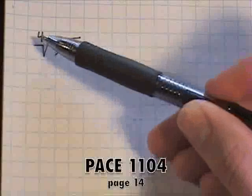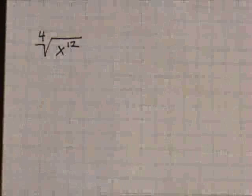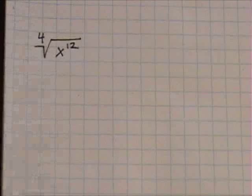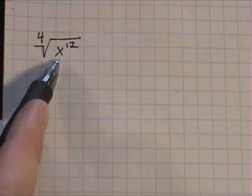When you have a number four up here for the index, that means you're going to be finding four equal factors that equal this number here, the radicand.